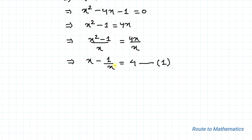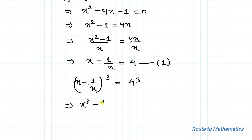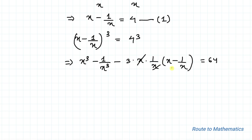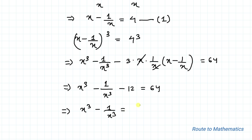Now in the next step we will cube both sides of Equation 1. So (x - 1/x)³ = 4³ = 64. Applying the algebraic identity for (a - b)³, we get x³ - 1/x³ - 3·(x · 1/x)·(x - 1/x) = 64. The x terms cancel, and substituting x - 1/x = 4 from Equation 1, we get x³ - 1/x³ - 12 = 64, so x³ - 1/x³ = 76. Let's call this Equation 1a.